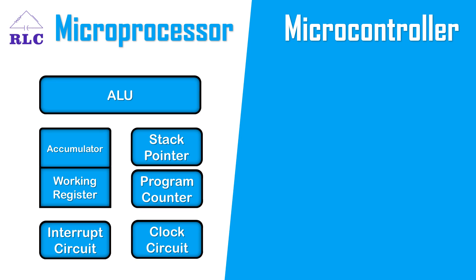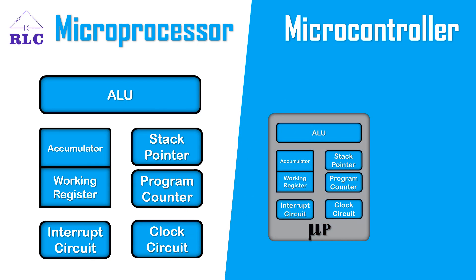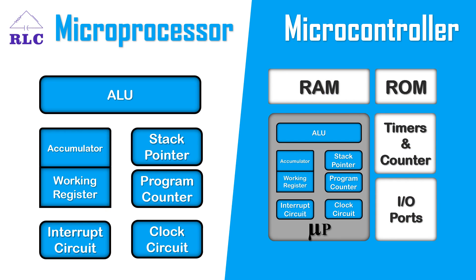Whereas a microcontroller consists of all the circuitry of a microprocessor, along with built-in RAM, ROM, timers, counters, and I/O ports. In present microcontrollers like Arduino, NodeMCU, and Raspberry Pi Pico, we can observe they also contain ADC, DAC, serial communication, and Wi-Fi modules.